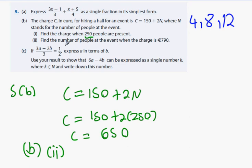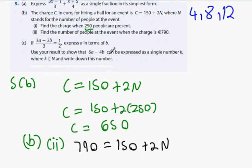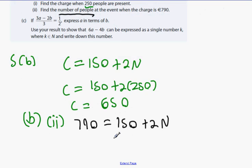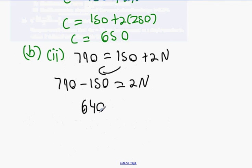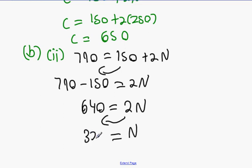What about b part 2? Find the number of people at the event when the charge is 790. What equals 790? Which letter? C is 790. 150 is still the same and it's still 2 times N. What letter do you need to get on its own? Number of people. You need to get N on its own. Bring the 150 over the other side. What happens? 790 minus 150, which is 640. And then what about the 2N? Divide by 2. And what you get? 320. N equals 320 people.